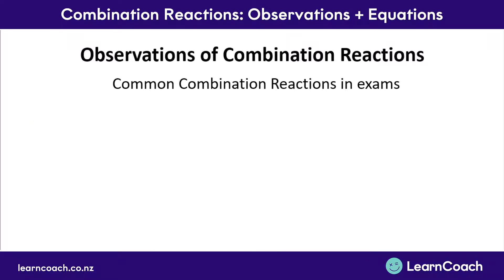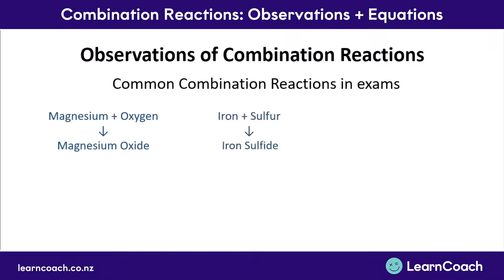There are three really common combination reactions that come up in level 1 chemistry exams: magnesium and oxygen producing magnesium oxide, iron and sulphur producing iron sulphide, and copper and oxygen producing copper oxide. It would be really good to get a solid grasp on what all three of these reactions look like.